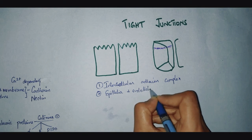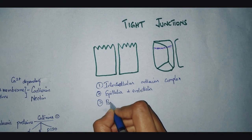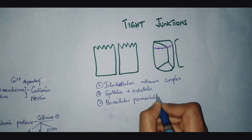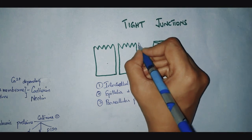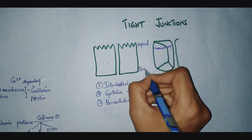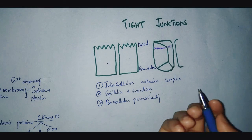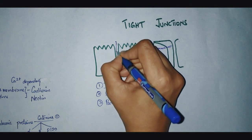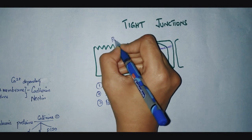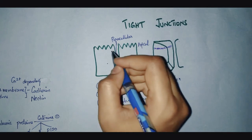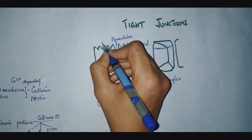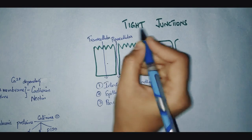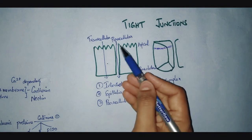The next point is that tight junctions control paracellular permeability. Consider one cell and an adjacent cell — this is the apical domain and this is the basolateral domain. If a substance is transferred across an epithelium by passing through the intercellular space, it is called paracellular transport. Whereas if a substance passes through the cell itself, it is called transcellular transport. Tight junctions control paracellular transport.